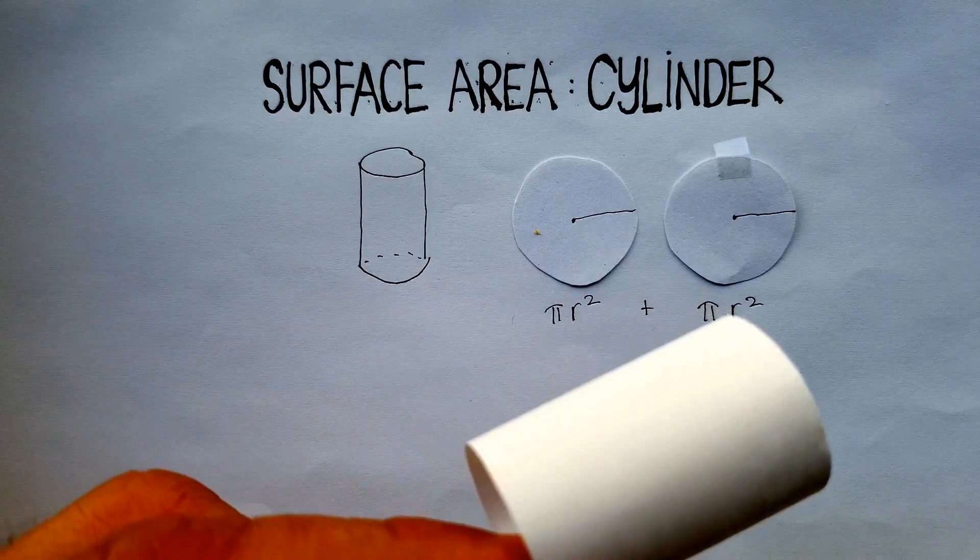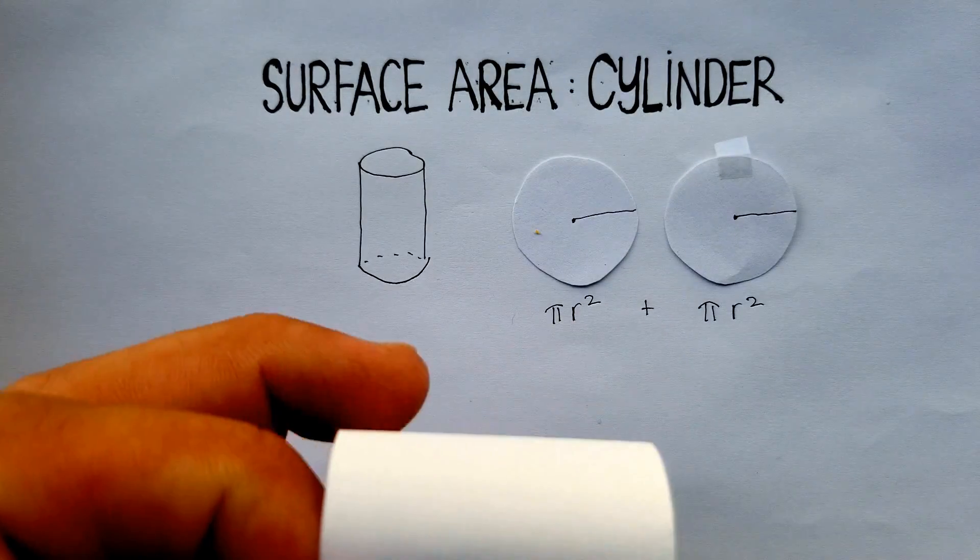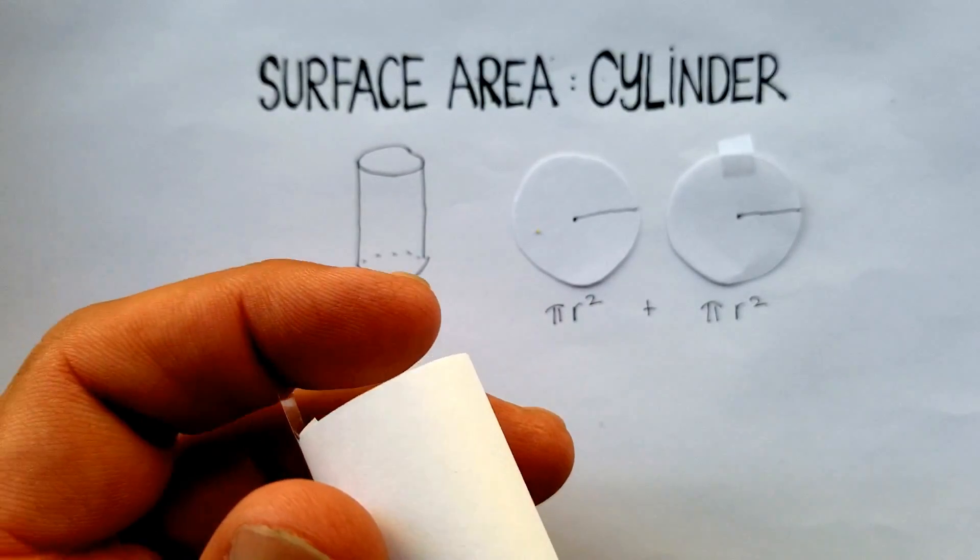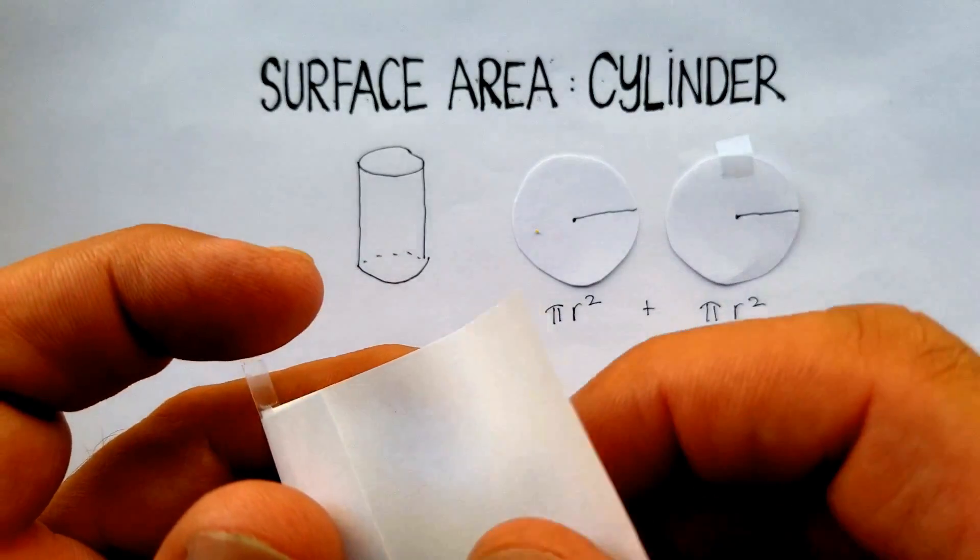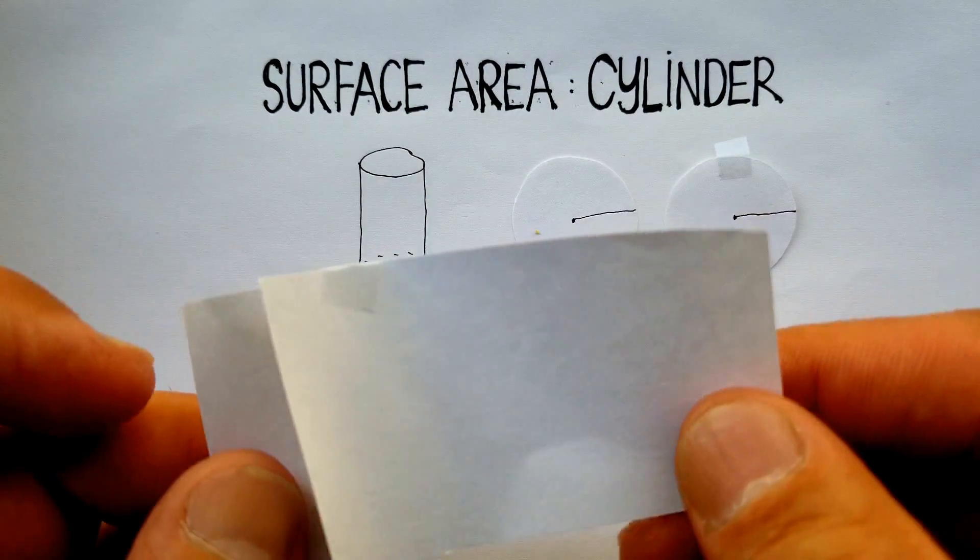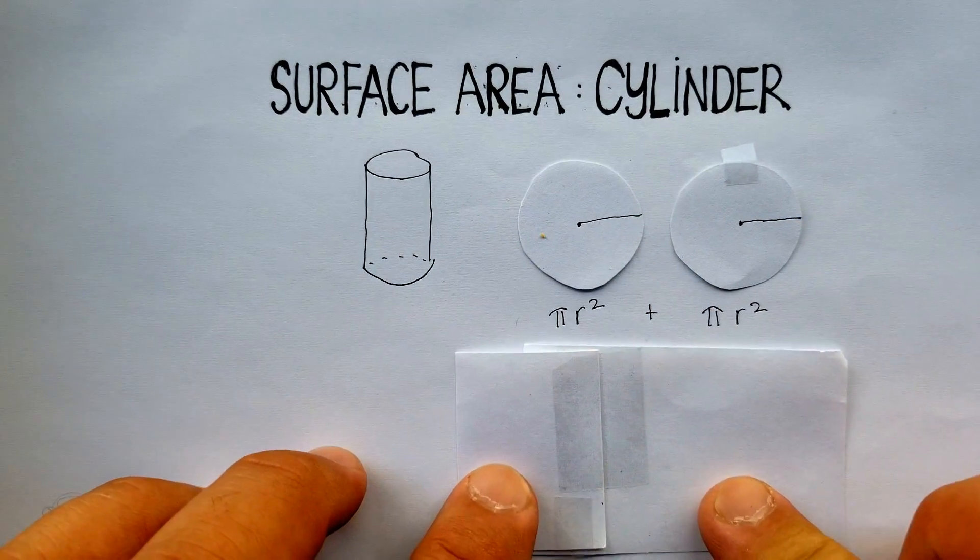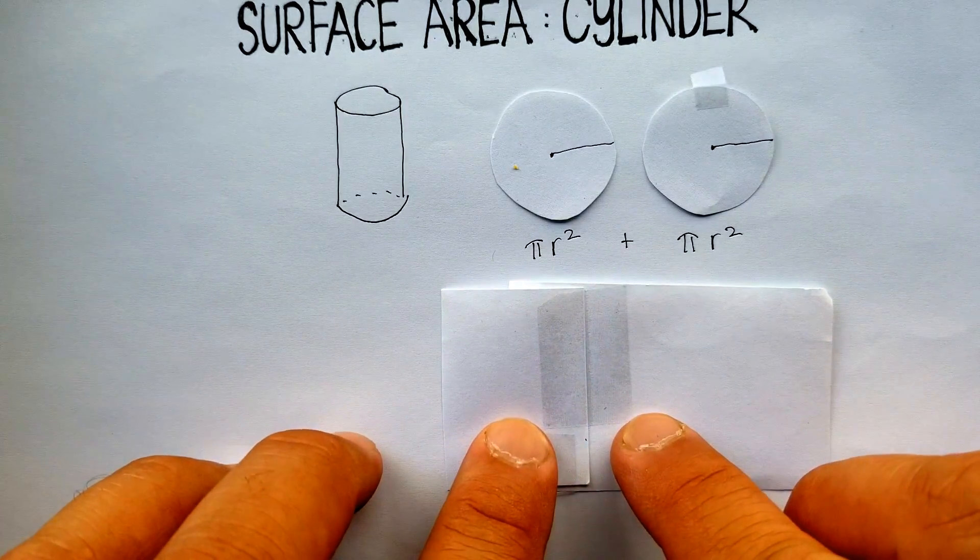With just a little bit of imagination, you can see that the body of a cylinder, let me just make a slit here. See, it just opens up like that. The body of a cylinder is really just a rectangle.